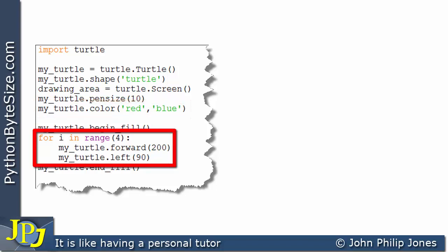And here, you can see we have the code for drawing a square. It's in a loop. And essentially, we move forward, turn to the left by 90 degrees, and do that four times because we're in this loop.